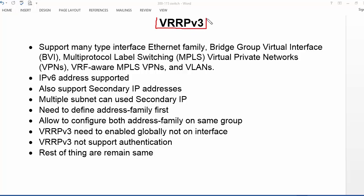Let us discuss VRRP version 3, or Virtual Router Redundancy Protocol version 3. Version 3 supports many types of interfaces like the Ethernet family — Ethernet, Fast Ethernet, Gigabit Ethernet — as well as Bridge Group Virtual Interface (BVI), MPLS VPN, and VRF-aware MPLS VPN in VLANs. Using these interfaces we can achieve first-hop redundancy.